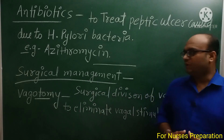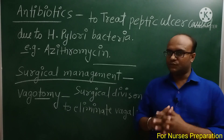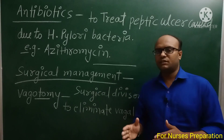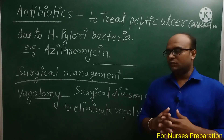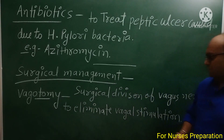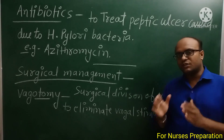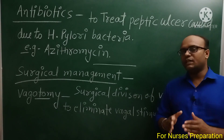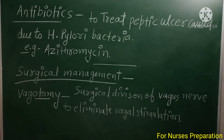अब बात करेंगे surgical management की। Surgical management की आवश्यकता तब पड़ती है जब दवाइयाँ असर दिखाना बंद कर दें, या ulcer वाली site पर perforation हो जाए। सबसे पहले है vagotomy — surgical division of vagus nerve to eliminate vagal stimulation। Vagus nerve का surgical division vagotomy कहलाता है। हम जानते हैं कि vagus nerve stimulate होने से ज़्यादा gastric juice secret होता है, जिससे peptic ulcer cause होता है।